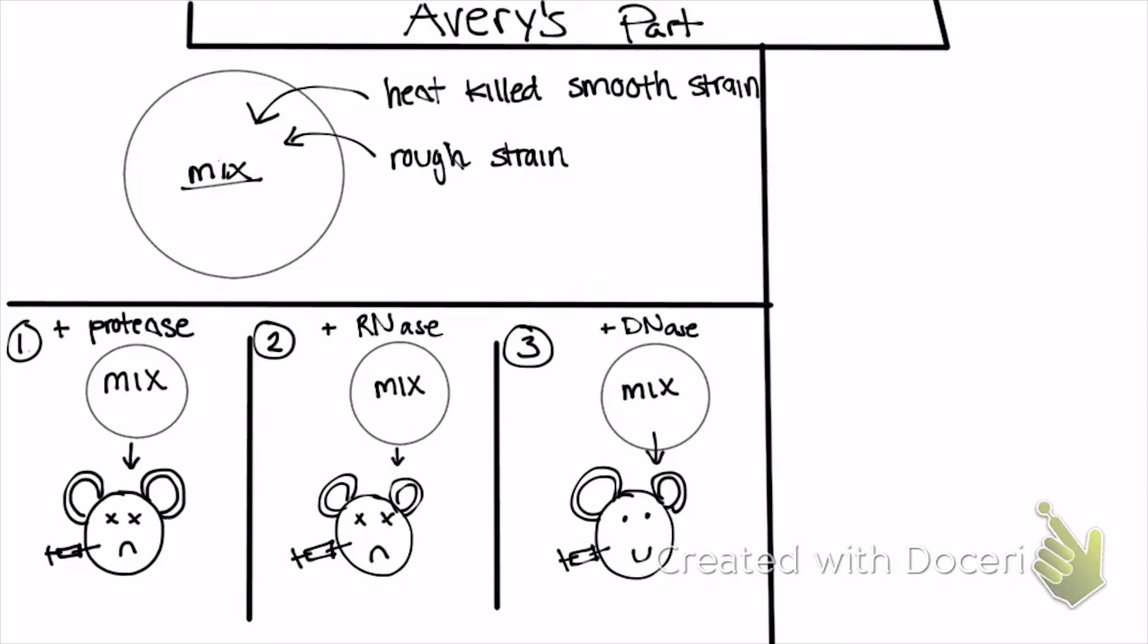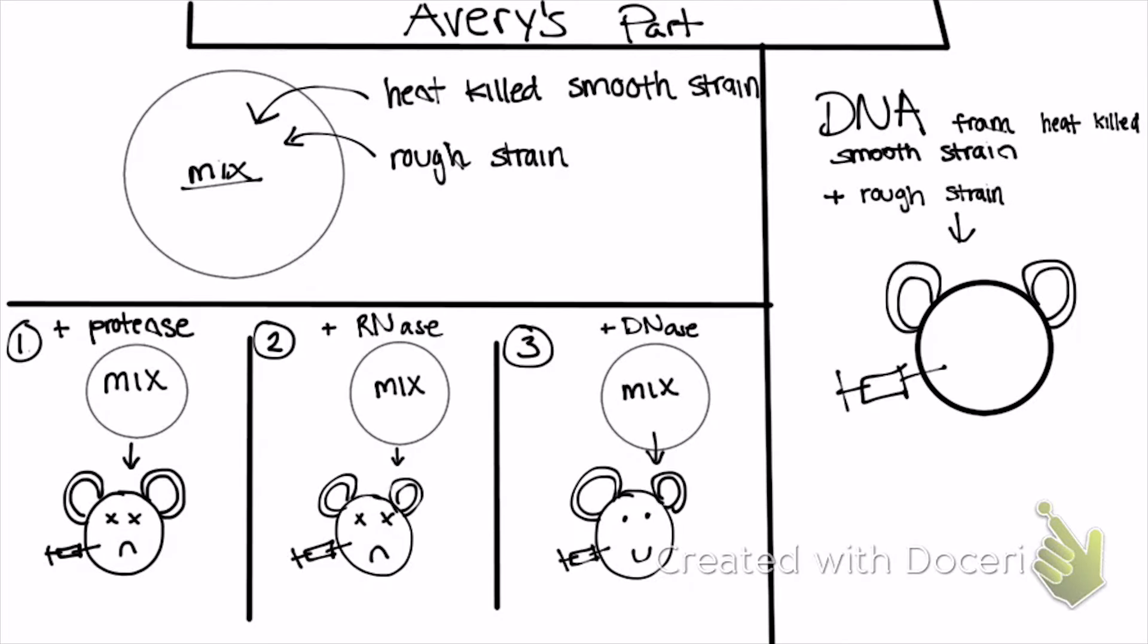That led to his observation that DNA contained genetic information. So he took it one last time, one step further, and isolated the DNA from the heat-killed smooth strain, added it with the rough strain, and if DNA was truly the genetic carrier, then it should have killed the mouse. So when he injected it into the mouse, it died. The conclusion that he drew from this is that DNA is the carrier of genetic information. And that is the Griffith and Avery experiment.